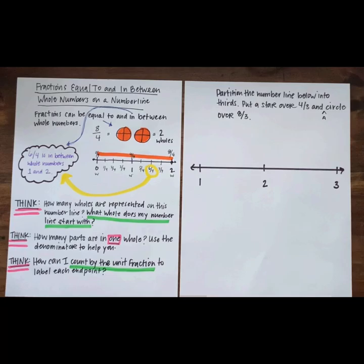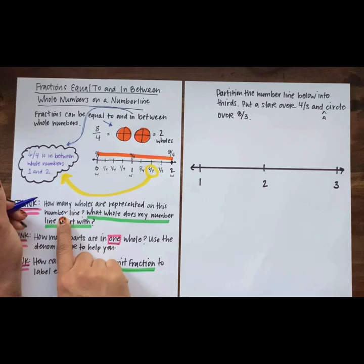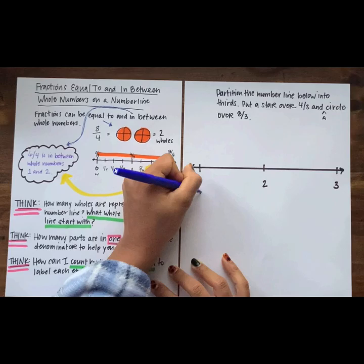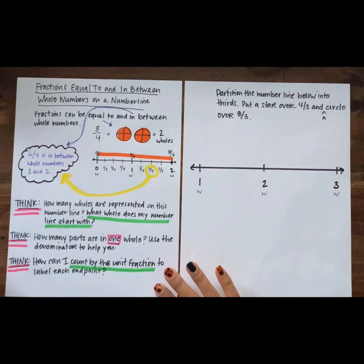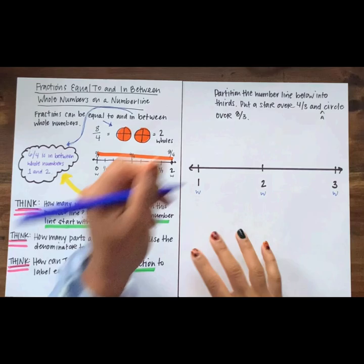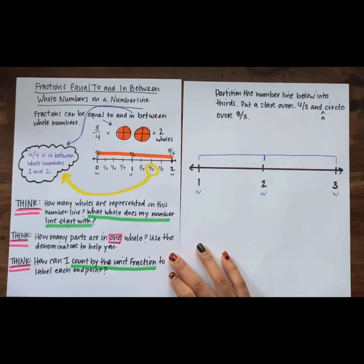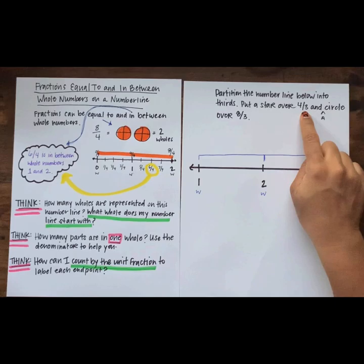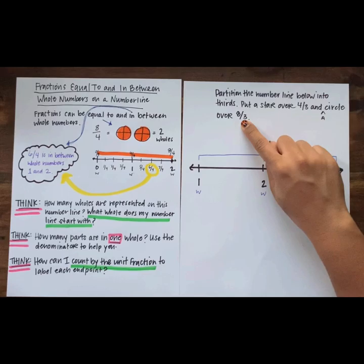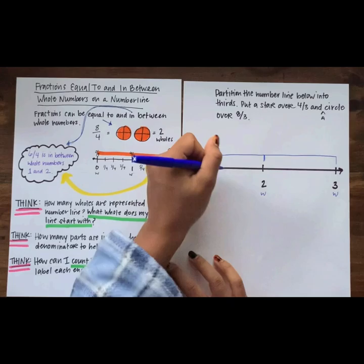As you look at number lines and locate fractions today, you have to remember to always start by thinking: how many wholes are represented on this number line, and what whole does my number line start with? How many equal intervals should we have in each whole? Because in this problem, they're asking us to place 4-thirds and 8-thirds on the number line. Our denominator tells us that the whole needs to have three equal parts.